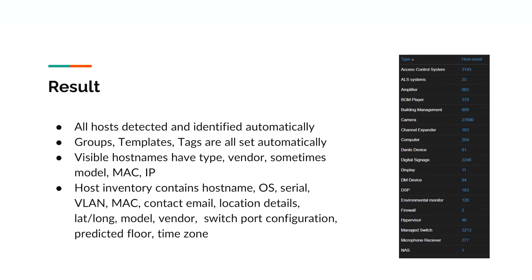The final result is that all hosts are detected and identified automatically, with groups, templates, and tags all set correctly and automatically. Visible host names include type, vendor, sometimes model, MAC, and IP. The host inventory contains hostname, OS, serial, VLAN, MAC, contact email, location details, latitude/longitude, model, vendor, switchport configuration, predicted floor, and time zone.